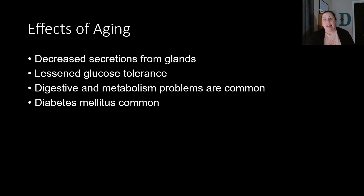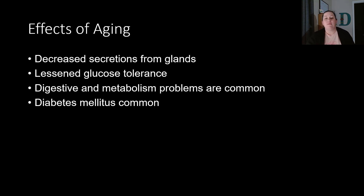Effects with aging: the aging process affects multiple organs throughout the body — tissues and organs start to get worn out over the years. We see a decreased secretion from our glands as we age, so certain hormone levels really start to drop. We also see less glucose tolerance as we get older, which is one of the reasons why type two diabetes is more common. Digestive and metabolism problems are very common as we age, and diabetes mellitus is more common as we age due to not watching sugar levels when younger as well as family history.